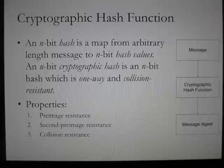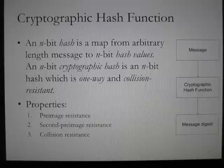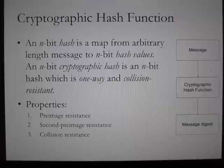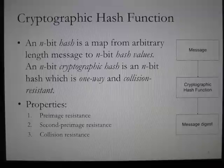A cryptographic hash function must have the following properties in order to withstand cryptanalytic attacks. First is pre-image resistance: it is intractable to obtain the original message given a hash. Second is second pre-image resistance: given an input message M1, it is intractable to find a completely different input message M2 such that both hash values of M1 and M2 match.